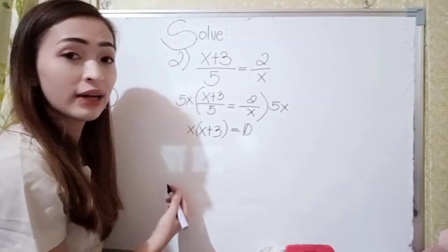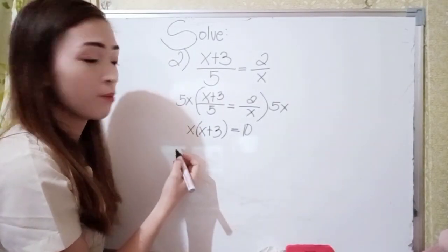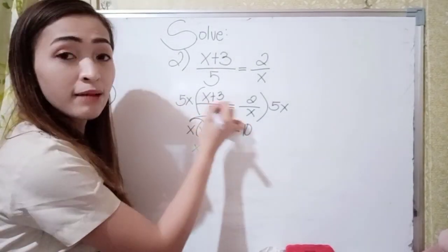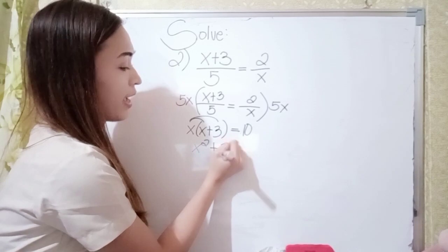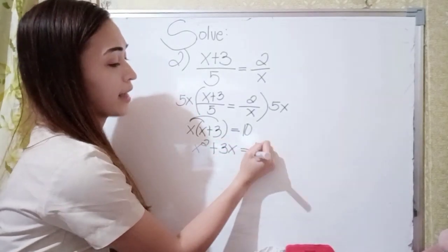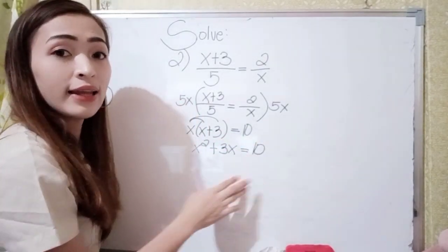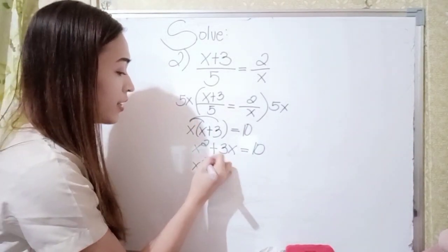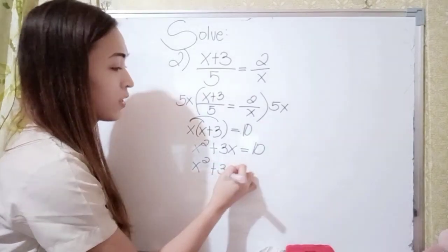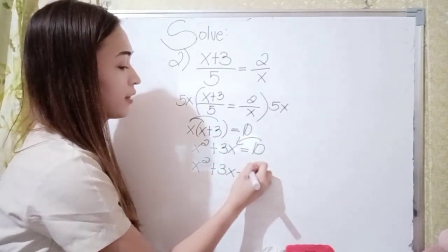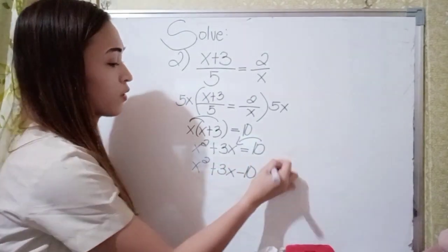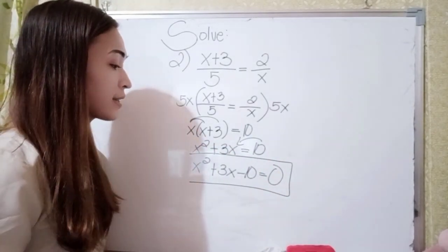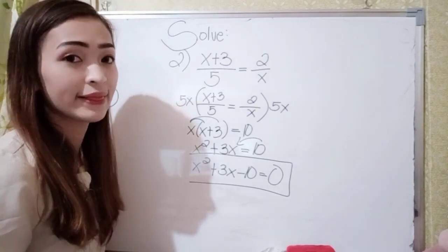Let's proceed using the distributive property. x times x is x squared, and x times 3 gives 3x, equals 10. Now let's write this into standard form: x squared plus 3x, and 10 becomes negative 10, equals 0. So the equation for number 2 is x squared plus 3x minus 10 equals 0.